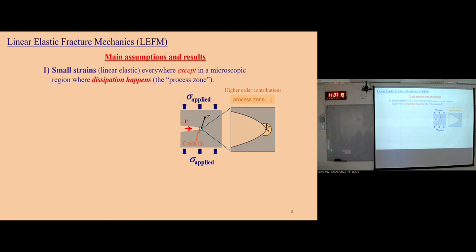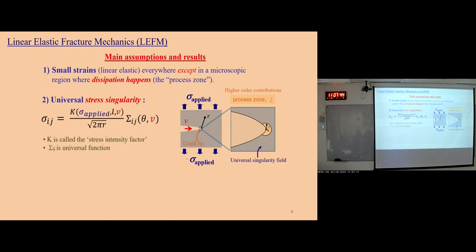The first assumption is small strain: every deformation inside the material is in the linear elastic regime, except in the microscopic process zone where dissipation happens, which only exists at the crack tip. Outside this region, it should be defined by a universal stress singularity, where the stress can be described by the equation: K over root R, with a universal angular function.